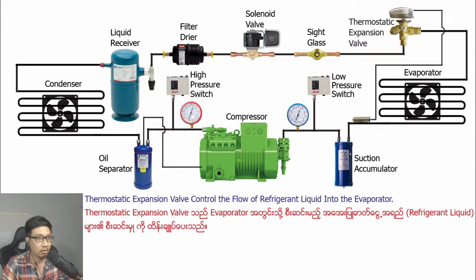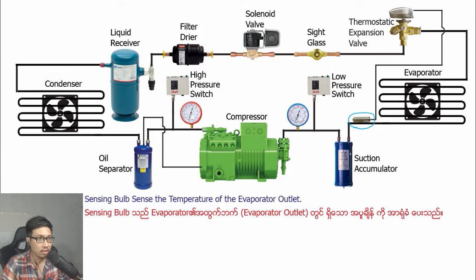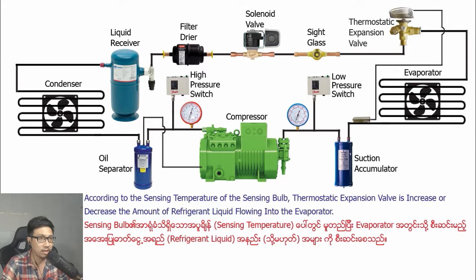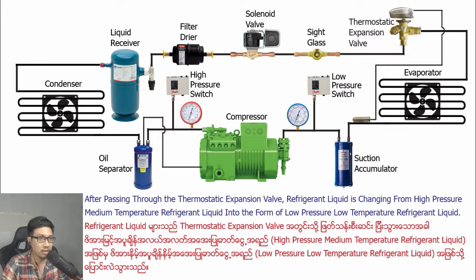The thermostatic expansion valve controls the flow of refrigerant liquid into the evaporator. The sensing pipe senses the temperature of the evaporator outlet. According to the temperature sensed by the sensing pipe, the thermostatic expansion valve increases or decreases the amount of refrigerant liquid flowing into the evaporator. After passing through the thermostatic expansion valve, refrigerant liquid changes from high pressure, medium temperature refrigerant liquid into the form of low pressure, low temperature refrigerant liquid.